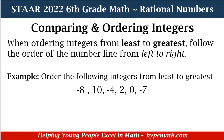In our example, we want to order the following integers from least to greatest: negative 8, 10, negative 4, 2, 0, and negative 7. Let's see what that looks like on our number line and what the list looks like as we order them from least to greatest — again, that's from smallest to the largest number.